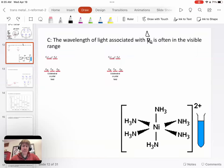Okay, so now back to the color part of how this works. The wavelength of light associated with delta zero, the crystal field splitting energy, is often in the visible range.